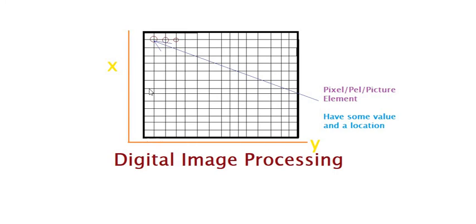The location is changing, the value is changing. So all these elements have specific location and specific value. These elements are called pixels or picture elements, or sometimes they are called pels.